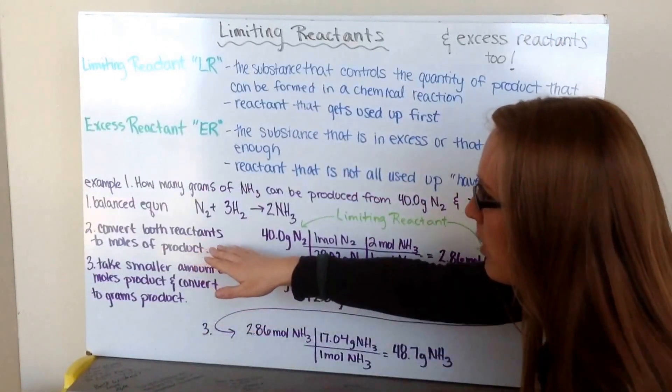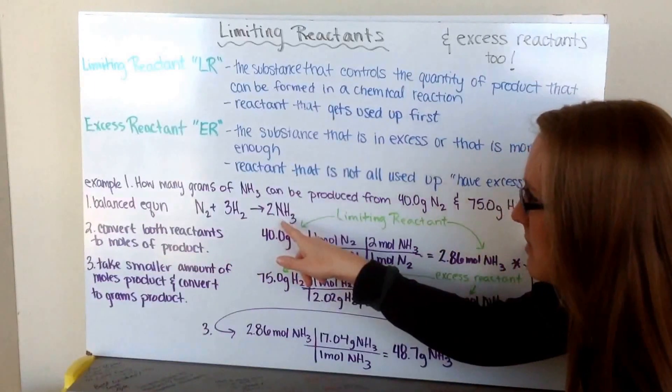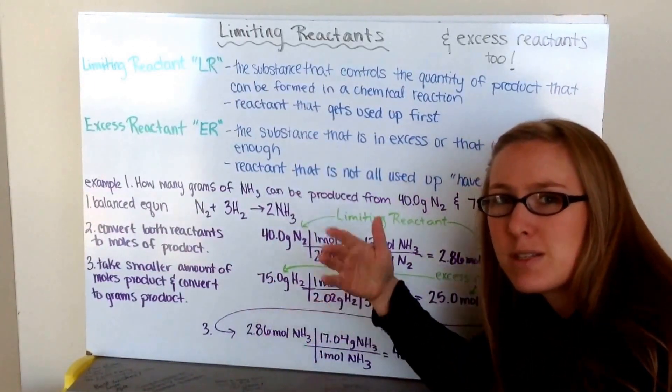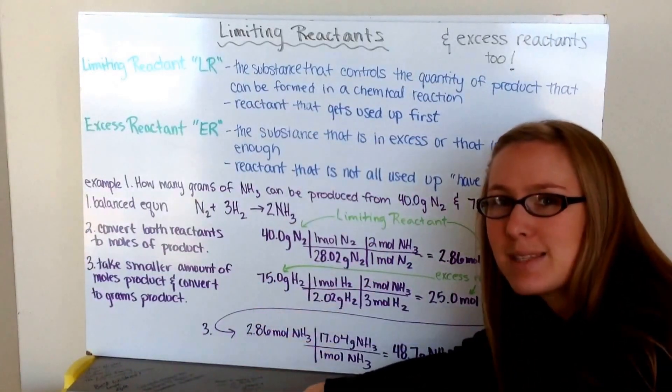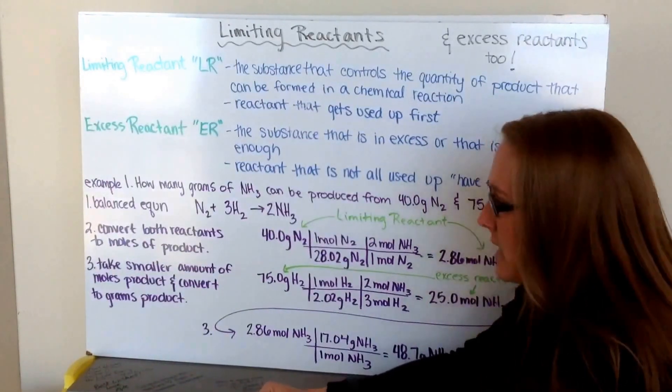Next, I need to convert both reactants to the moles of the product I'm looking for. In this case, it's ammonia. Now, remember that I can compare moles of one thing to moles of another because they're going to be equal. So, by converting both to moles, I can easily see which one makes the least amount of moles of ammonia, which is going to be my limiting reactant.